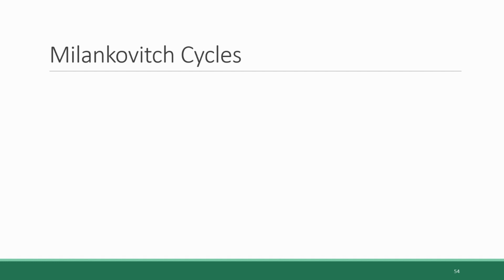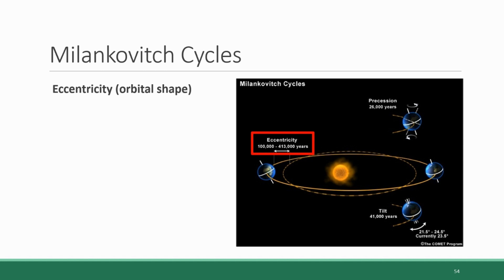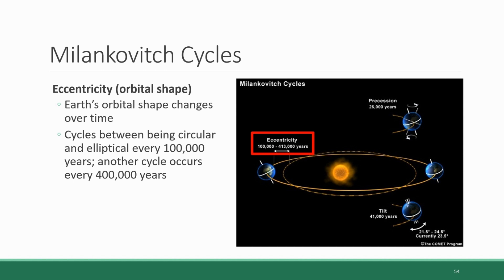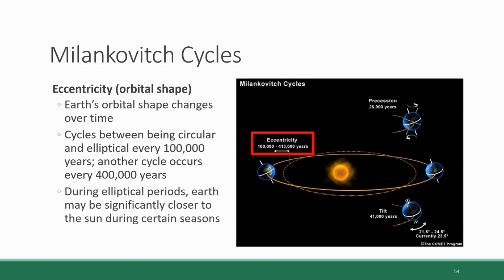The first of these three characteristics is the Earth's eccentricity — in other words, the shape of the orbit of the Earth as it moves around the sun. Earth's orbit changes shape very slowly over time, gradually cycling between being circular in shape to being elliptical or oval shaped. This cycle occurs in two separate ways: one form takes place every 100,000 years, and another takes place every 400,000 years. This is significant because during elliptical periods, the Earth may be significantly closer to the sun during certain seasons. The Earth's orbit is currently in an elliptical stage, closest to the sun in early January and furthest in early July, which makes for slightly milder summers and winters.